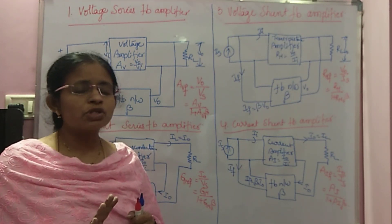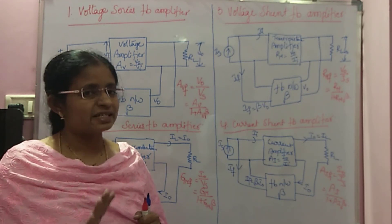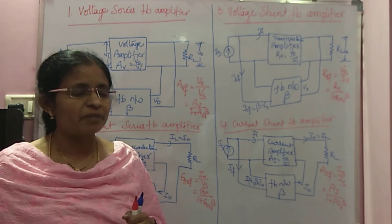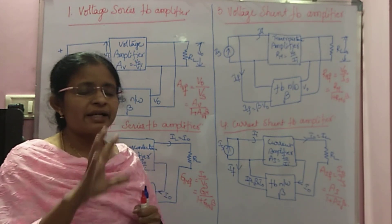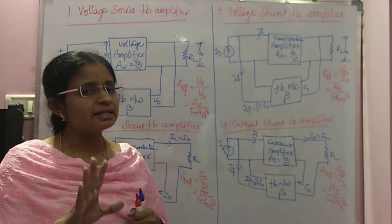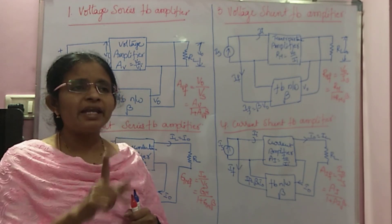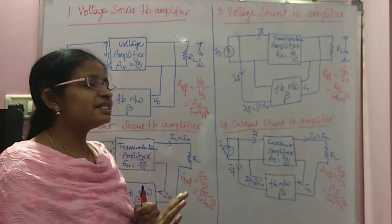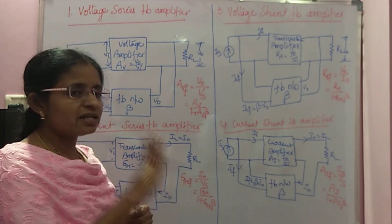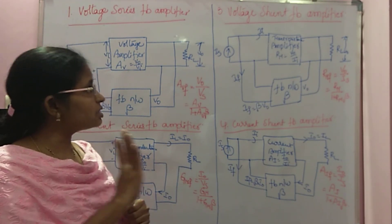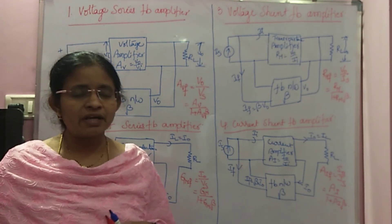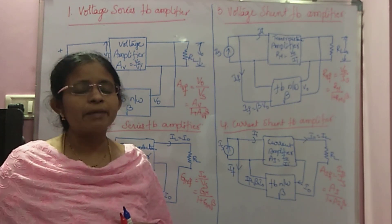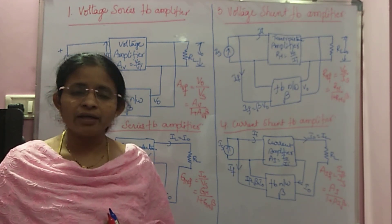In total, these four are the feedback amplifiers. There are two types of sampling and two types of mixing networks — voltage sampling, current sampling, shunt mixing, and series mixing. With those two-by-two combinations of sampling and mixing, you can design four feedback amplifiers. This concludes the topic of types of feedback amplifiers. Thank you very much.